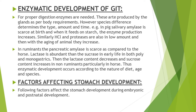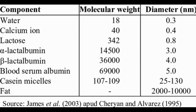Lactase is more abundant than sucrase in early life because in milk the sugar comes primarily from lactose — therefore lactose is known as milk sugar. For the digestion of lactose, the young one needs lactase rather than sucrase. So its lactase content is higher in early life. But as the young one starts eating solid diet, its sucrase content will go on increasing.